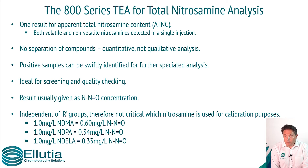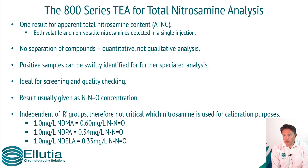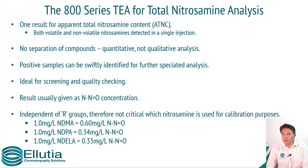The TEA can also be used for total nitrosamine analysis. Rather than speciating using a GC or HPLC system, you have one peak. We are using a chemical reaction to release the nitrosyl radical for detection. In this state the TEA is a molar detector for the nitrosamine. As you can see, one milligram per litre of each of these nitrosamines has a different mass of the nitrosyl group, so yes, it is a molar detector at this stage.